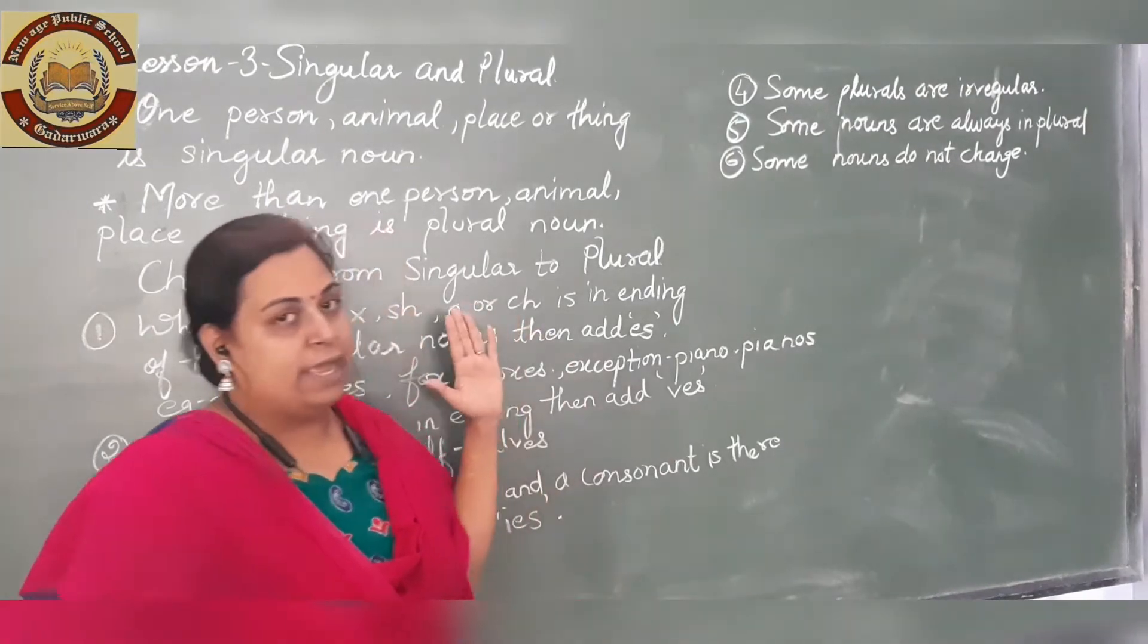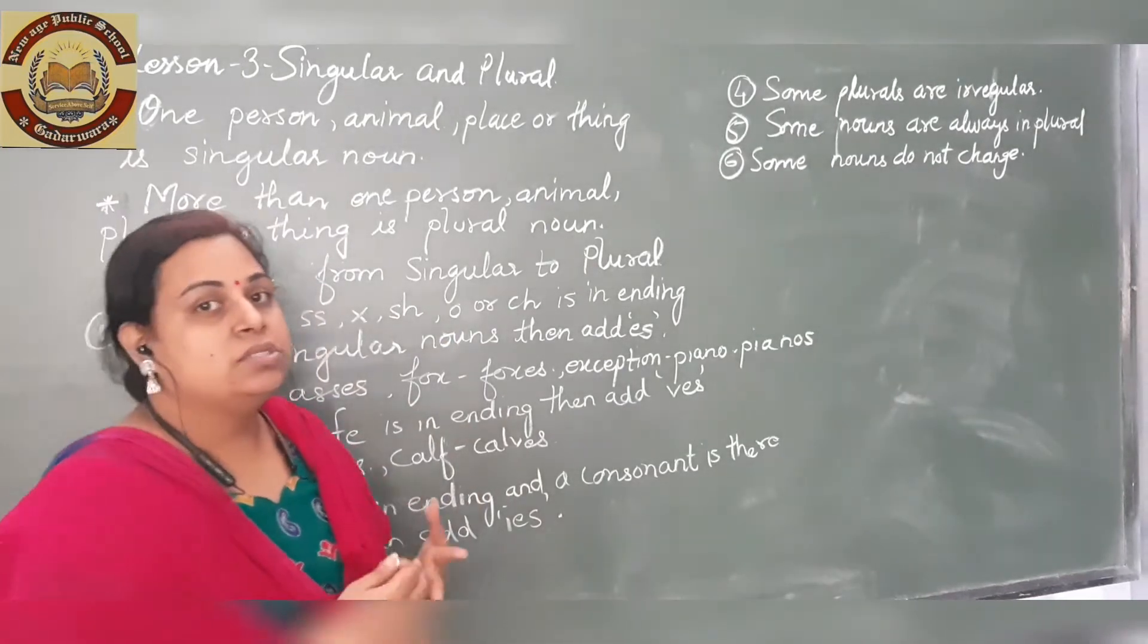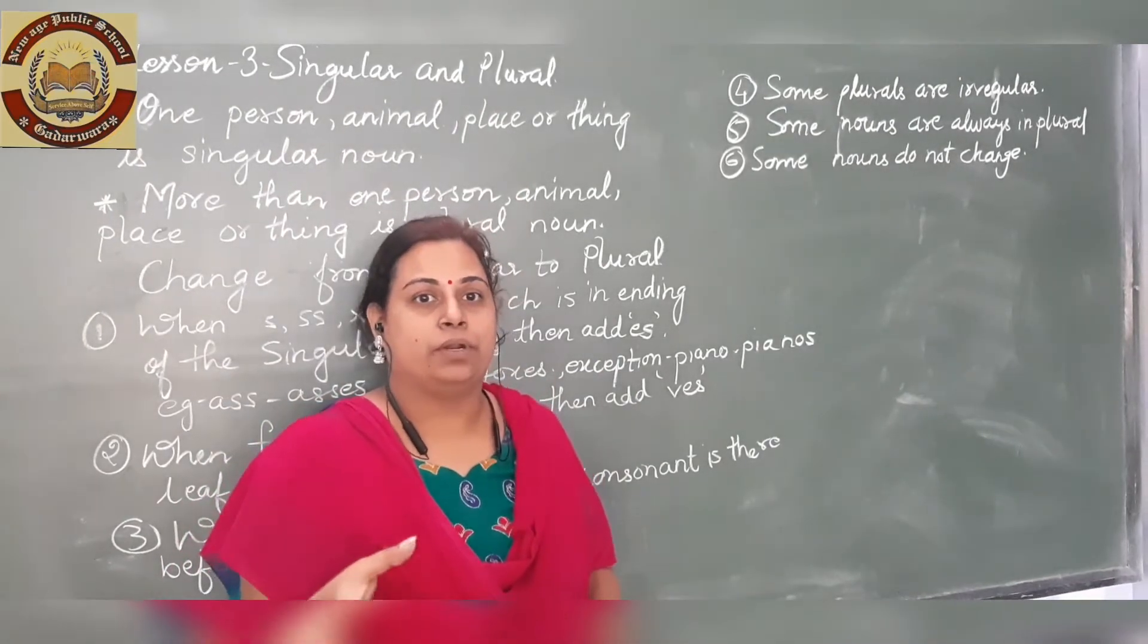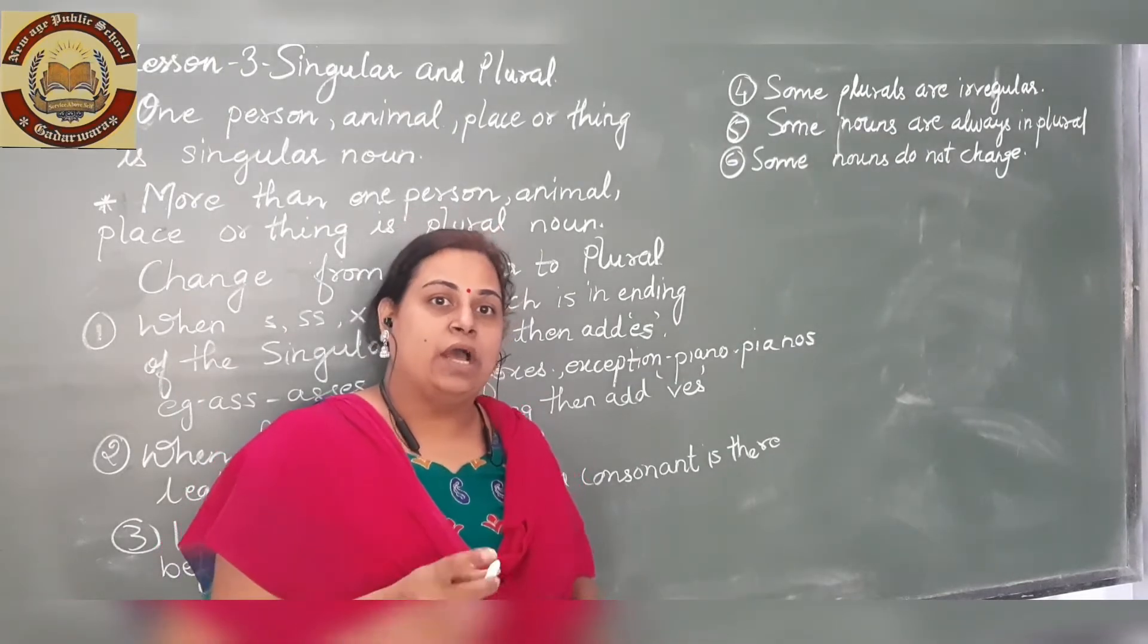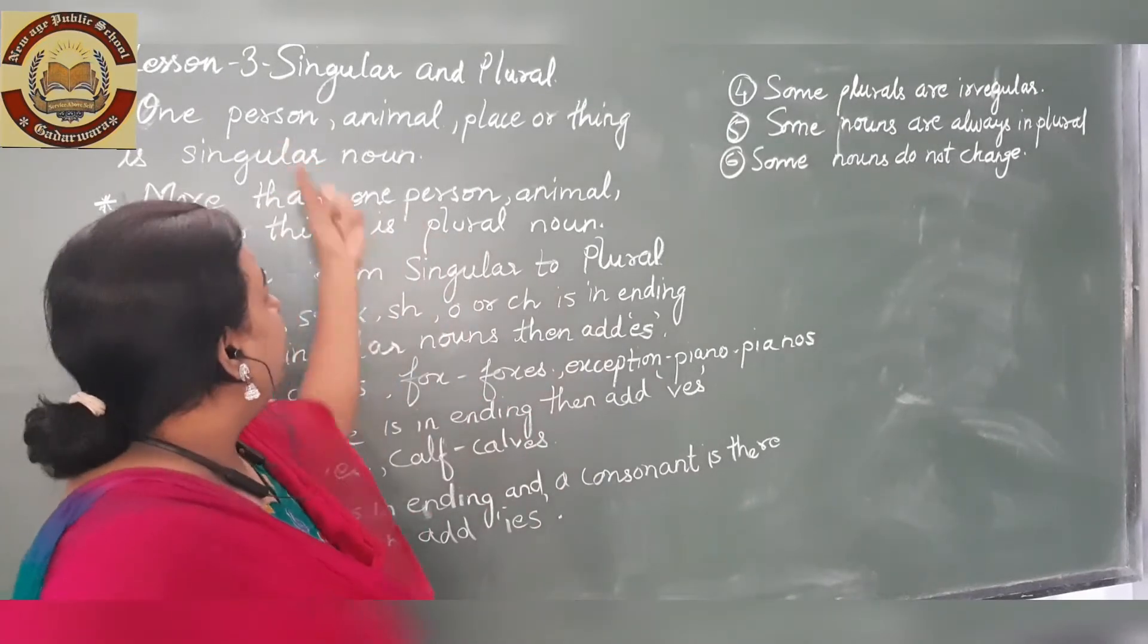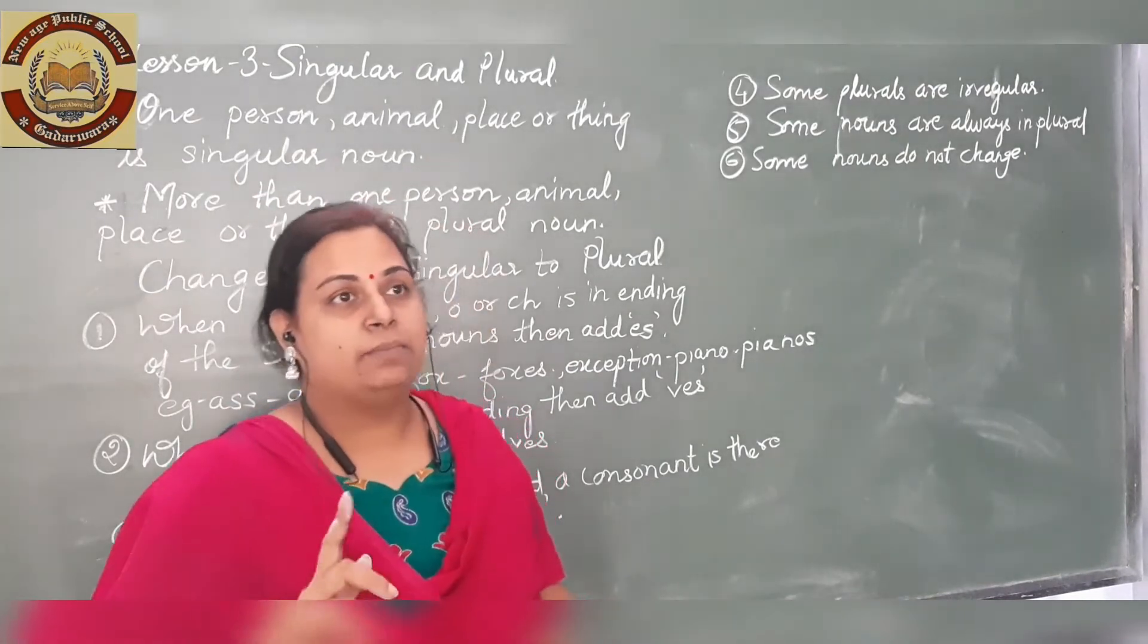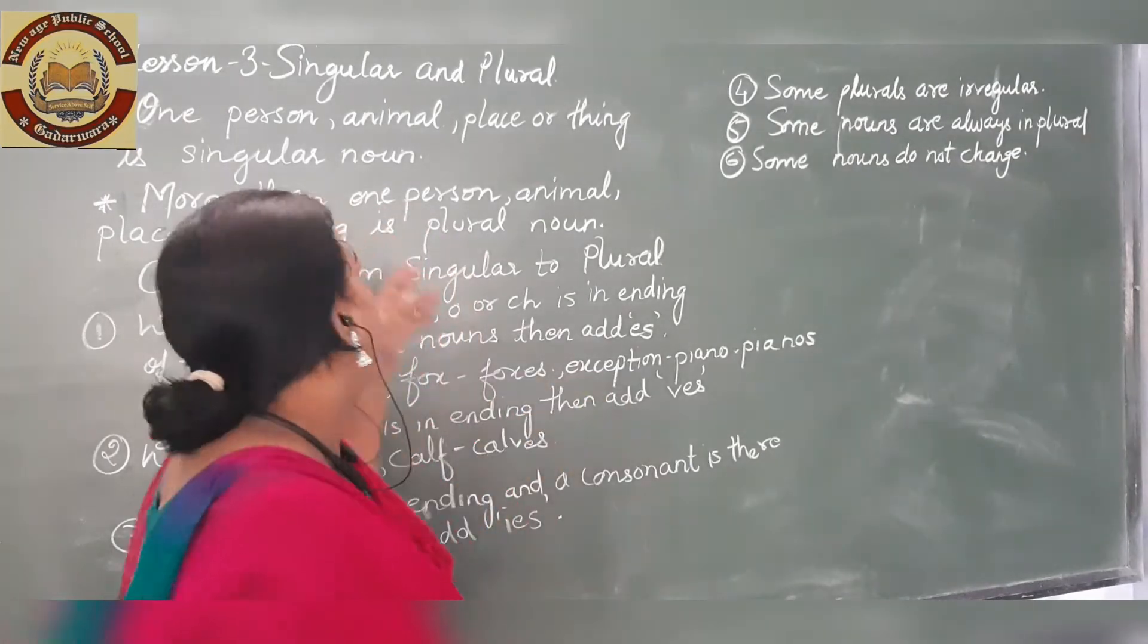Now let's start Singular and Plural, another aspect of nouns. This shows the number of nouns - whether a noun represents one or more than one. Singular means one person, animal, place, or thing. If there is one in the count, we call it singular.